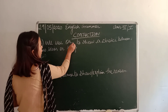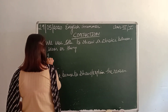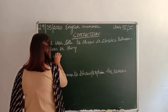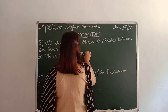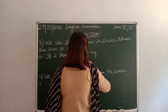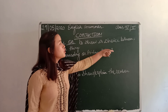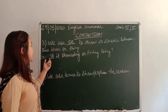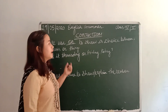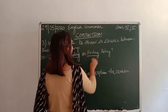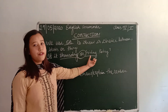Number three: the conjunction word 'or'. When do we use the conjunction word 'or'? We use 'or' to show a choice between two ideas or things. For example: Is it Thursday or Friday today? So Thursday and Friday are two different things being asked about. We use 'or' to connect Thursday and Friday, showing a choice between them.